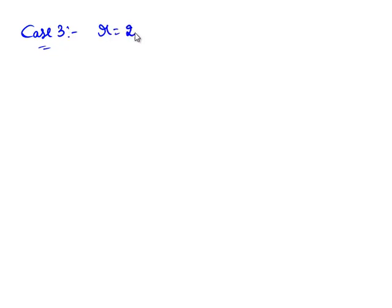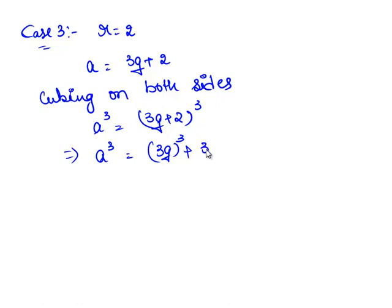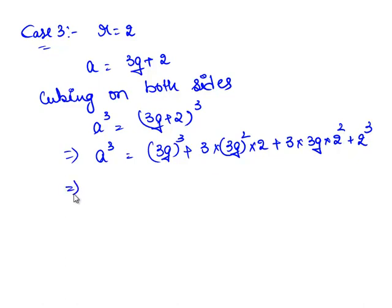Now take case 3 where r equals 2. We have a equals 3q plus 2. Cubing on both sides, a³ equals (3q plus 2)³. Expanding, this gives (3q)³ plus 3(3q)²(2) plus 3(3q)(2²) plus 2³, which implies a³ equals 27q³ plus 54q² plus 36q plus 8.